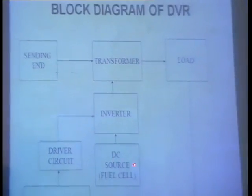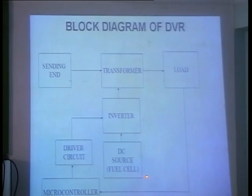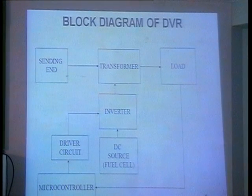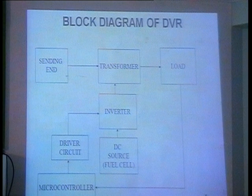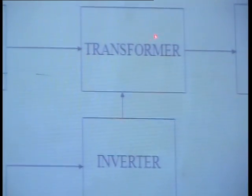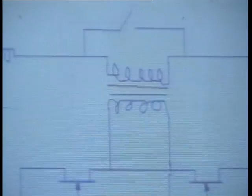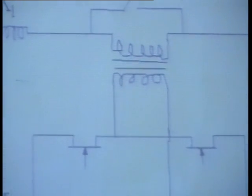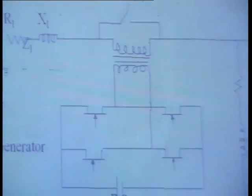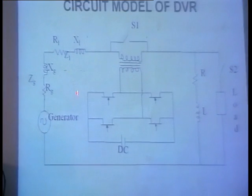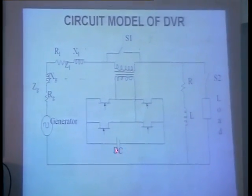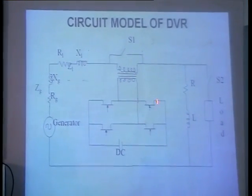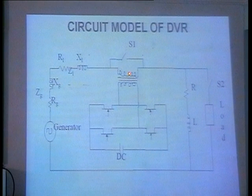In DVR you have an inverter, some DC source — a fuel cell, solar cell, or battery — and then the inverter, and then an injection transformer which injects the voltage to compensate the drop. Your circuit model of DVR will be something like this: at the sending end there is line impedance, then the DC source, the inverter, and the injection transformer.